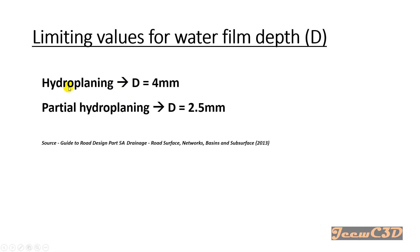The limiting values for aqua planning: a water film depth of 4 millimeters or more indicates that the area is prone to aqua planning. On the other hand, there will be partial hydro-planning if the water film depth is around 2.5 millimeters. Those are the basic concepts about aqua planning. Now we will go to Civil 3D to do the analysis.